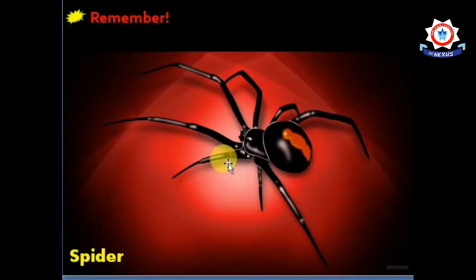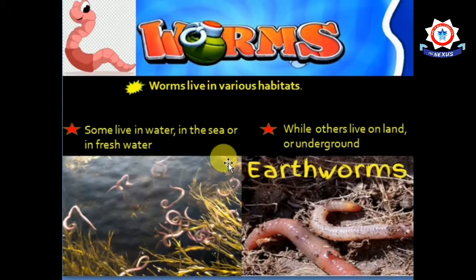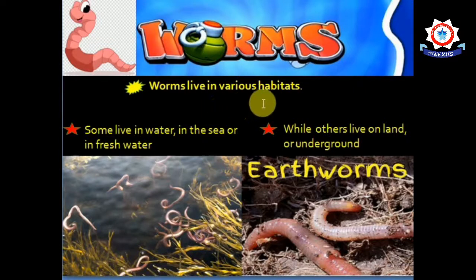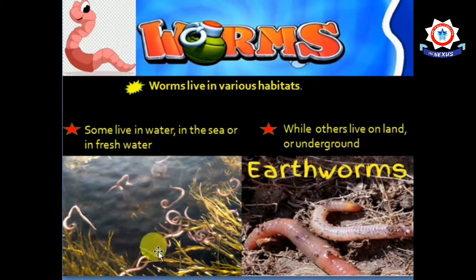Worms are elongated, soft-bodied invertebrates. They usually have a long tube-like body and no arms or legs. Some can cause infections, and some are parasites that live in the bodies of other animals. Worms live in various habitats — some live in water, in the sea or in fresh water, while others live on land or underground.